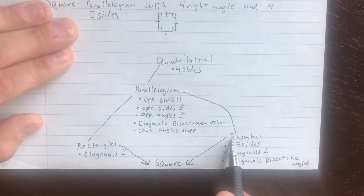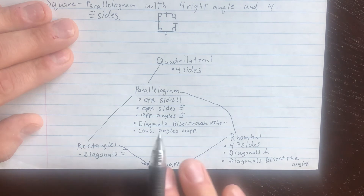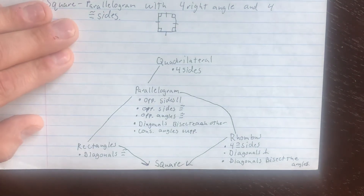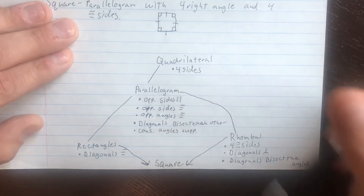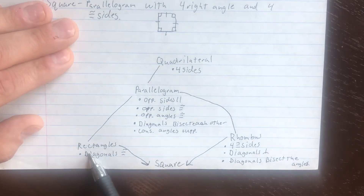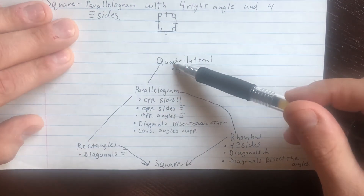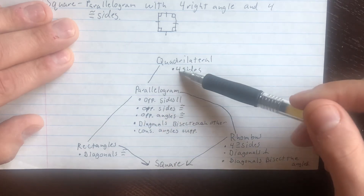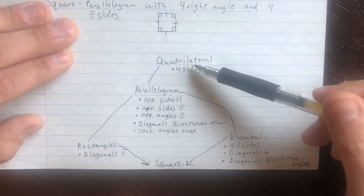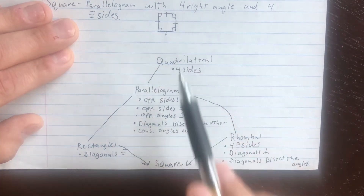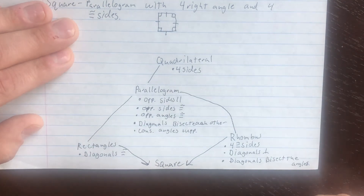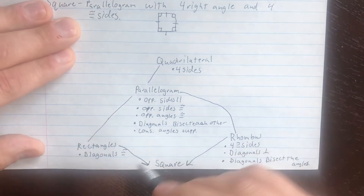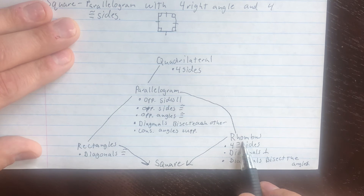A square is always a rhombus and always a rectangle. Starting at the bottom of the flowchart and working up, all characteristics are always true. So a square has all properties of the parallelogram and the quadrilateral. Going down the flowchart, a quadrilateral is only sometimes a square, sometimes a rectangle, sometimes a rhombus. Bottom going up — always true; top going down — sometimes true. The tricky one: a rectangle is only sometimes a rhombus, and that's only if it's a square.